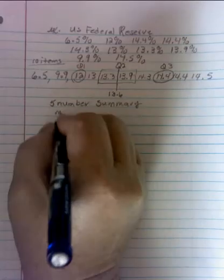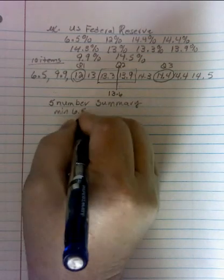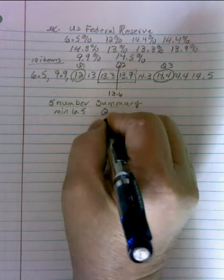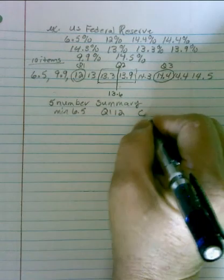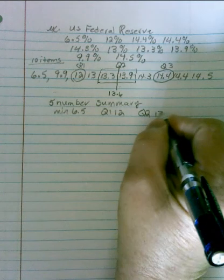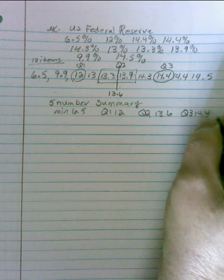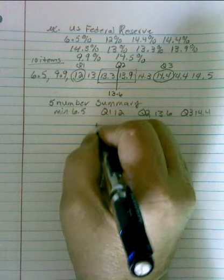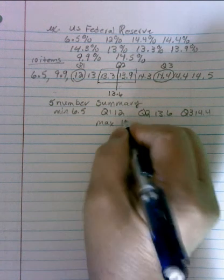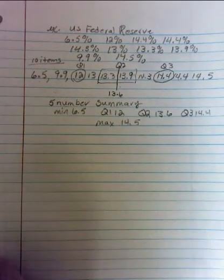For the min is 6.5. Quartile 1 is 12. Quartile 2 is 13.6. Quartile 3 is 14.4. And our max is 14.5. So if we were drawing our box and whisker plot for that.